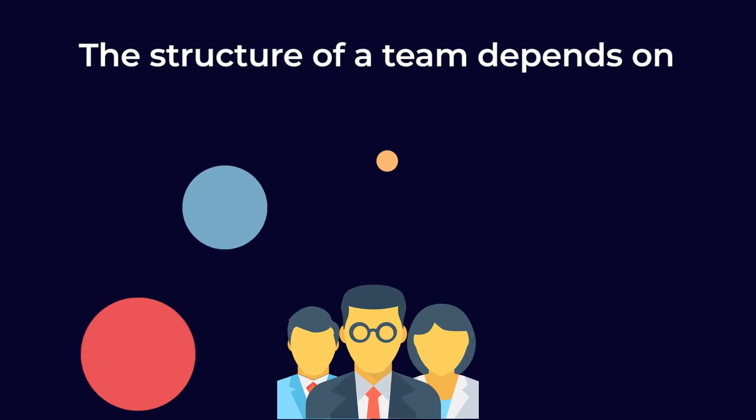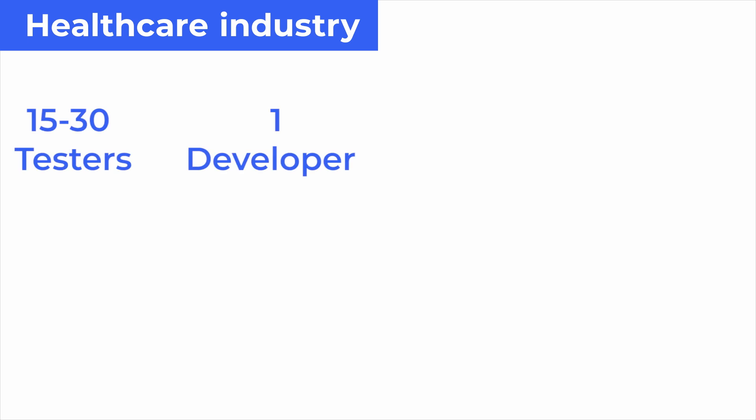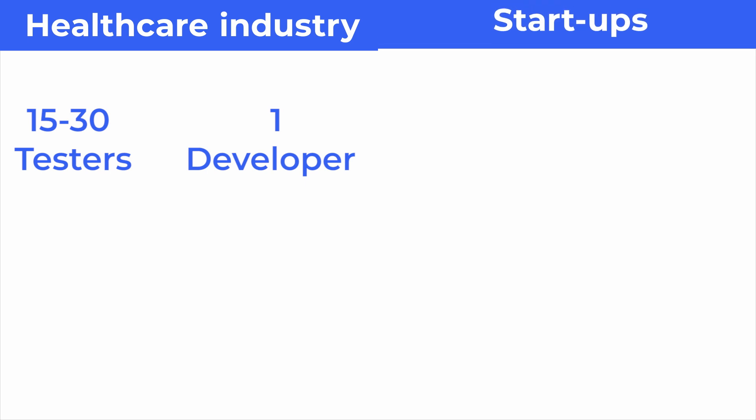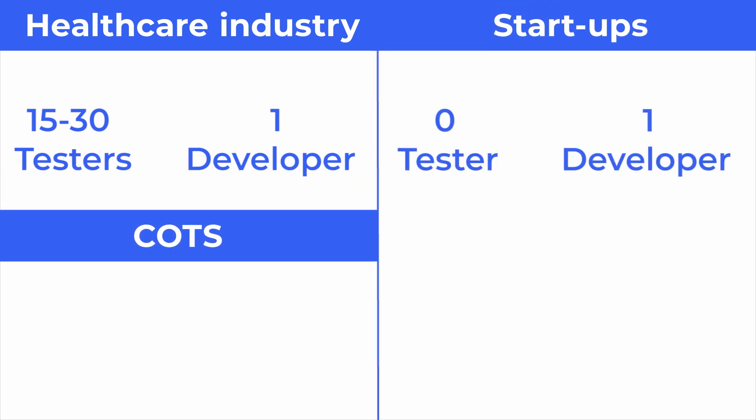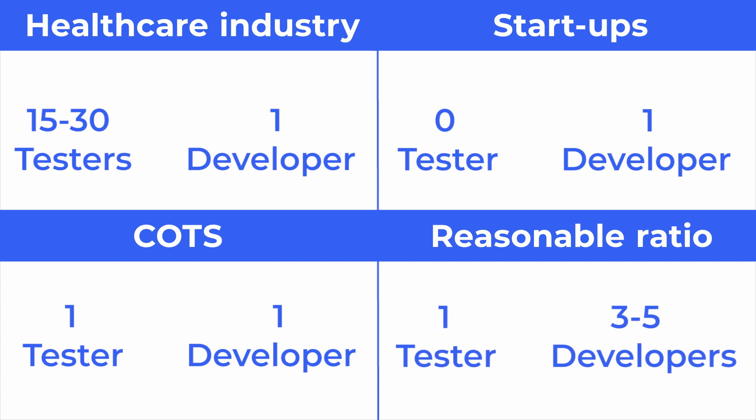A frequently asked question is what tester-to-developer ratio is optimal for the development team, but there is no definite answer. The structure of a team depends on the type of solution, industry, safety requirements and many other factors. For example, projects in the healthcare industry can require even 15 or 30 testers to one developer. Startups often have no budget for testers. Teams involved in commercial off-the-shelf software development usually have one-to-one ratios. In practice, one tester to three-to-five developers is a reasonable ratio for business solutions. The common advice is to focus on the number of quality activities needed to achieve customer satisfaction. The higher the risks, the more testers should be in a team. One highly capable tester might be ten times more effective than less experienced colleagues.